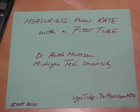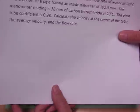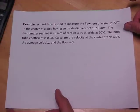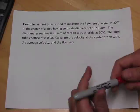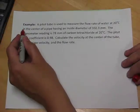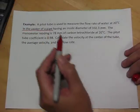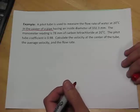I've been asked to do a problem with a pitot tube so I've chosen a problem from Giancopolis. A pitot tube is used to measure the flow rate of water at 20 degrees C. The flow rate at the center of a pipe having an inside diameter of 102.3 millimeters.